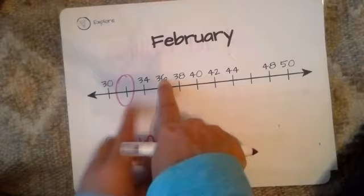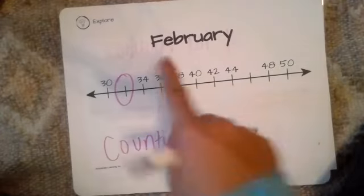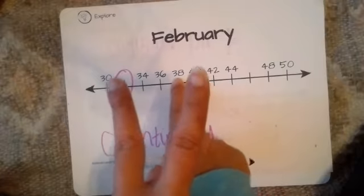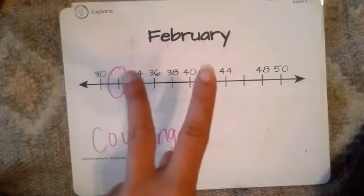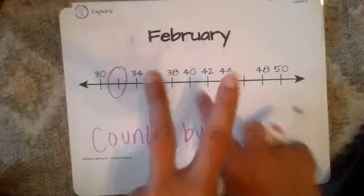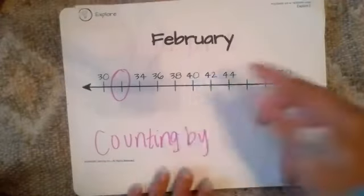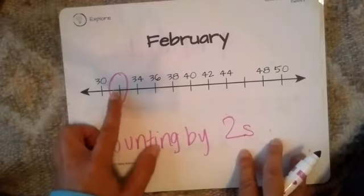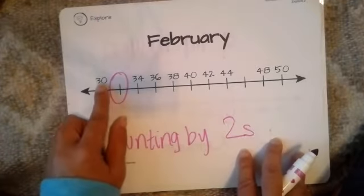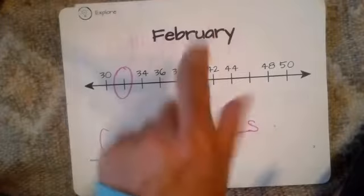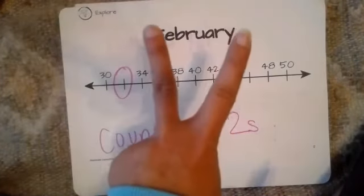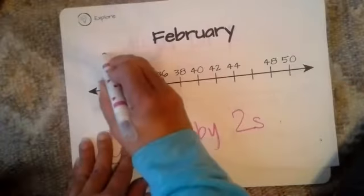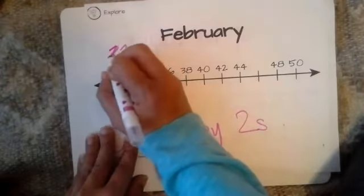Let's see if that follows the same pattern of counting by twos. 34, 36 — yes! 36, 38 — yes! 38, 40 — yes! So now we see that they're counting by twos. So how can I figure out the missing number at the beginning? Let's start from 30 and count by twos: 30, 32. So this number right here must be 32.